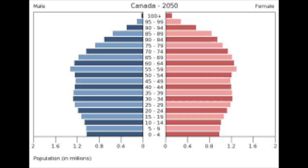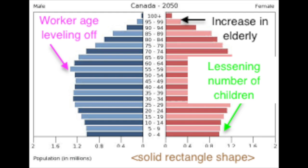As a country moves into stage four of the demographic transition model, we can see that it really evens out a lot. We have a lot of older people, our middle is starting to widen, and our bottom starts to thin a little bit. But you can see it's a very proportional shape instead of the really strong pyramid shape we saw before.